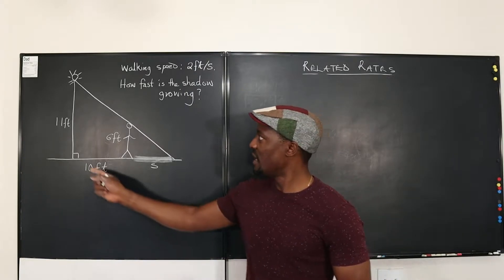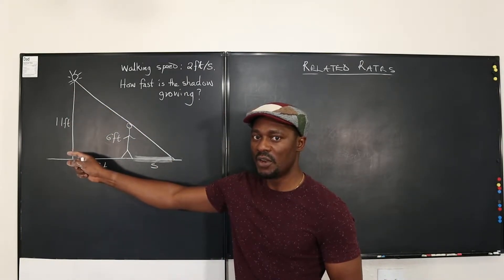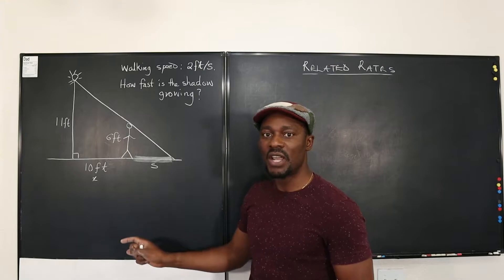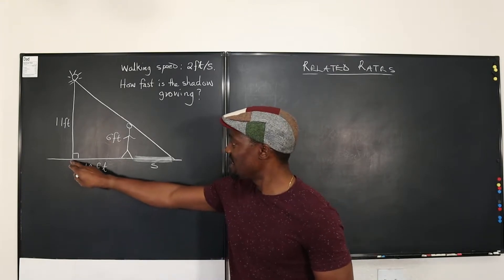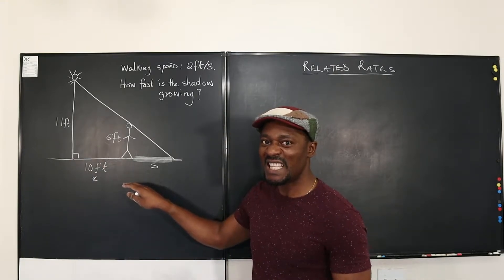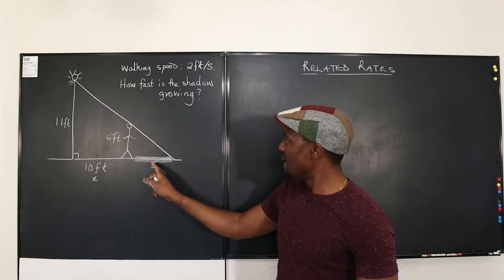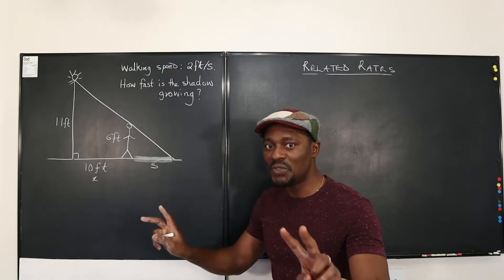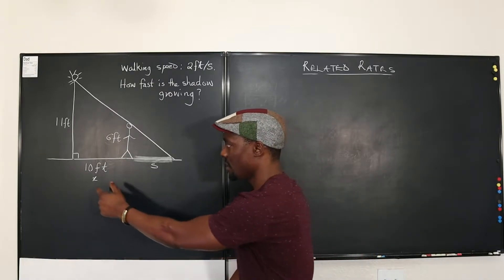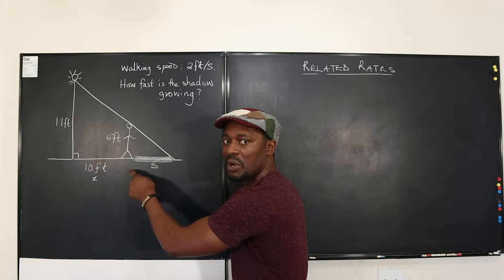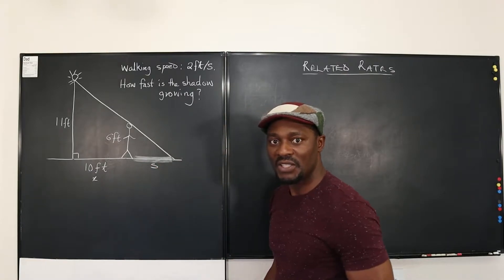What is changing? Is the height of the lamp post changing? No. Is the man's height changing? No. Is the distance from the lamp post changing? Yes, because he's walking away from the light. Is the shadow getting longer? Yes. So the two things that are changing are the distance from the lamp post and the length of the shadow.